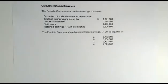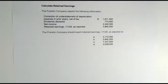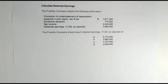Welcome to intermediate accounting. Today we'll be talking about retained earnings. Retained earnings for a corporation is a little different from other entities, so we'll cover how to calculate a retained earnings statement. Here we have Franklin Company, and they report the following information: they had a correction of understatement of income tax expense in prior years net of tax, they declared some dividends, they have net income, and the retained earnings as of 1/1/2020 as reported is three million nine hundred thousand five hundred. Franklin Company should report retained earnings at 1/1/2020 as adjusted — at what amount?